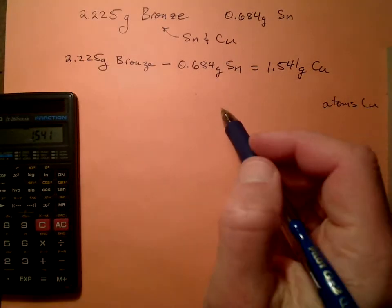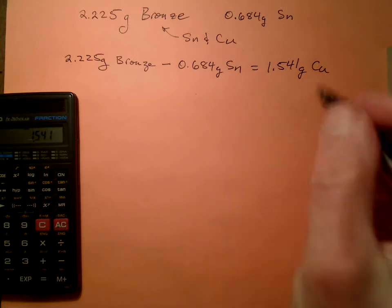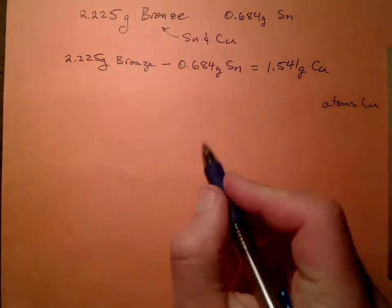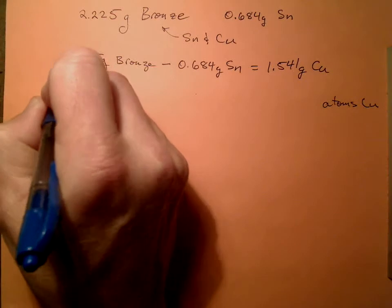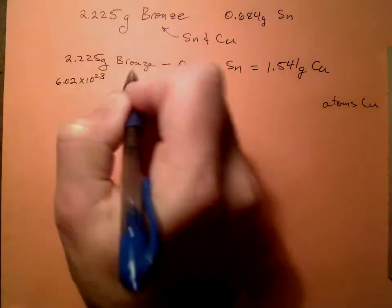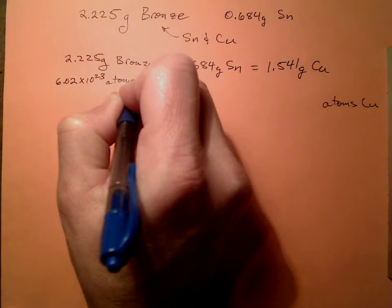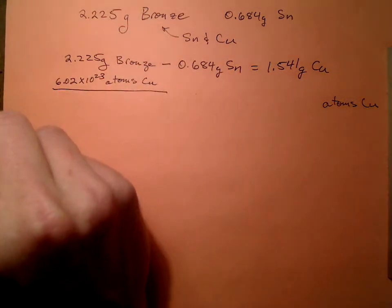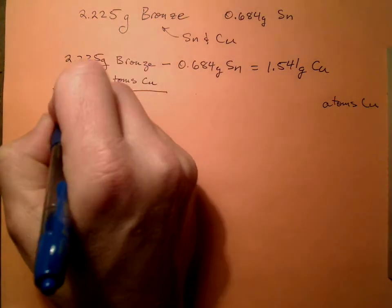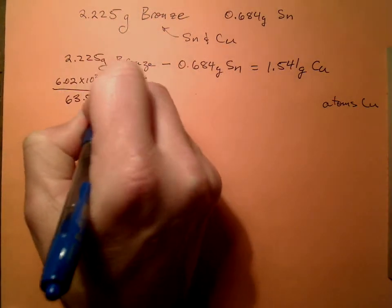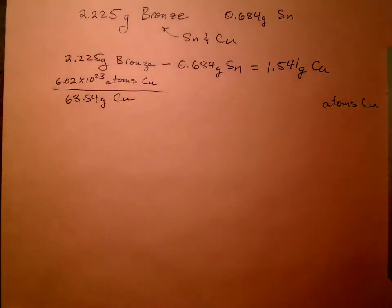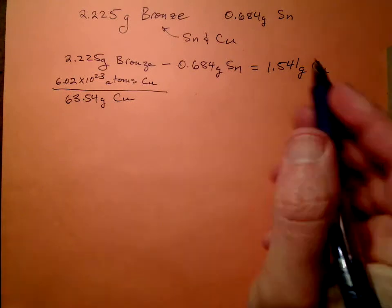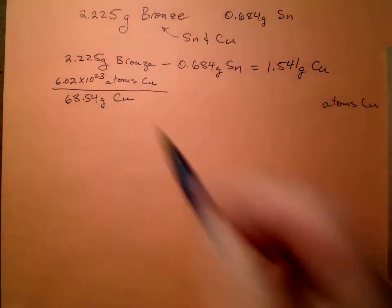So we have 2.225 minus 0.684 equals 1.541 grams of copper. Alright. Remember we also have this conversion factor. We have 6.02 times 10 to the 23rd atoms of copper in 63.54 grams of copper. Alright, so now we have everything we need. We've got grams of copper and we have a conversion.